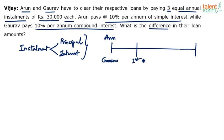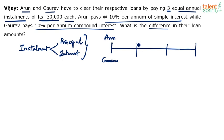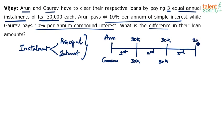At the end of the first year, second year, and third year, each one of them is paying 30,000. Arun has paid 30,000 at the end of the first year, Gaurav has also paid 30,000 at the end of the first year. At the end of the second year, both have paid 30,000. At the end of the third year, Arun has paid 30,000 and Gaurav has paid 30,000.